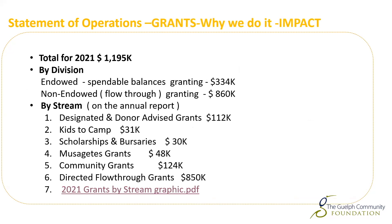The second part of our statement of operations is money spent on grants. This is why we do what we do. Last year in 2021, we granted out in external grants $1,195,000. Of that, $334,000 was coming from endowed funds and the other $860,000 came from our flow-through funds. We report grants in a number of ways — one way you'd notice on the annual report is by stream. The largest comes from our directed flow-through grants at $850K. Community grants is a big project of our granting committee, as are Kids to Camp and scholarships.